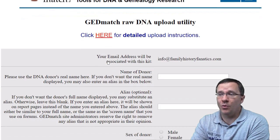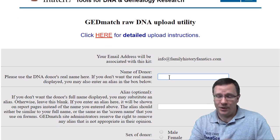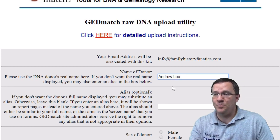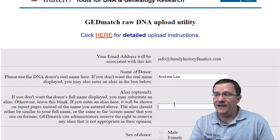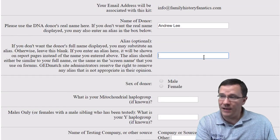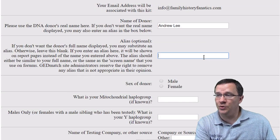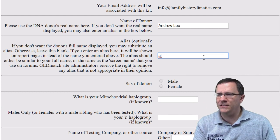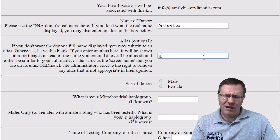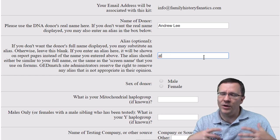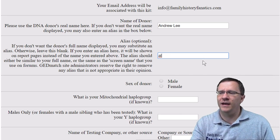Let me show you what it's going to do. First off, the name of the donor — in this case this is me. If I want to have an alias I can add one, so I'm just going to put my initials. You don't have to put an alias, but I recommend it for most people because that way people are going to have to contact you before they find out too much information about you.